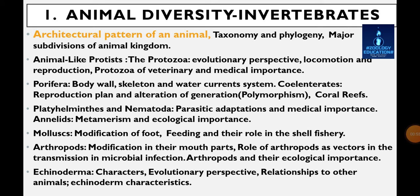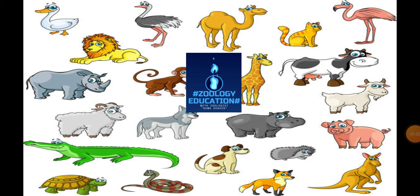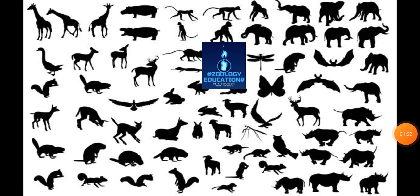From our first major category, we choose one minor category: the architectural pattern of an animal. This video is also helpful for those who search about the architectural pattern of an animal. It's a lengthy topic, so I will cover it in a few more videos. Here you see a variety of animals — different kinds of animals — and their evolution from basic to top, which we discuss in this video.